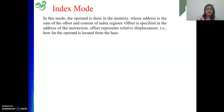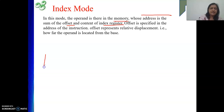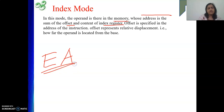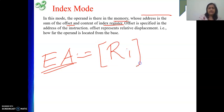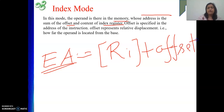In case of index addressing mode, your data will be there in memory. That means your operand is in memory, but whose address will be the sum of the offset and the content of the index register. The address of your operand is called the effective address — as I told you in my last video. So the effective address equals the content of a register plus the offset. These two will be added to get the address of your operand.